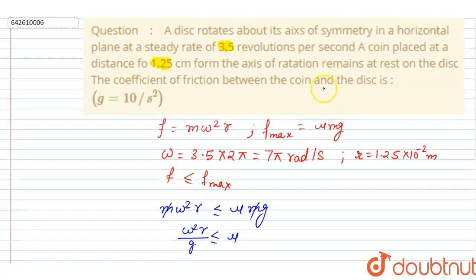So let us see the question now. In the question, it is asked that the coefficient of friction between the coin and the disc, and it is given that the coin is placed at a distance of 1.25 cm from the axis of rotation and remains at rest on the disc. So I will write here the mu is simply 0.6, and this is our answer.